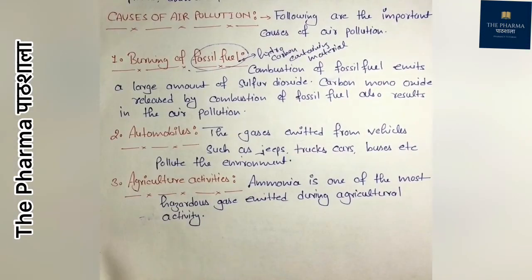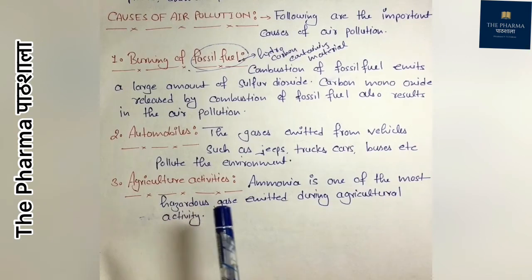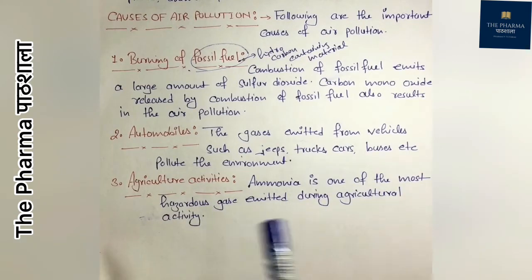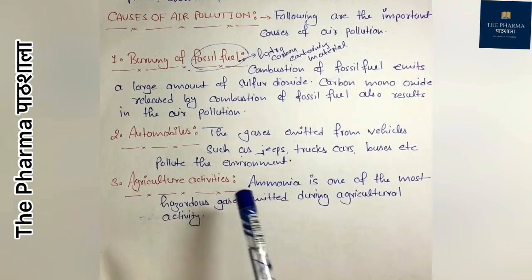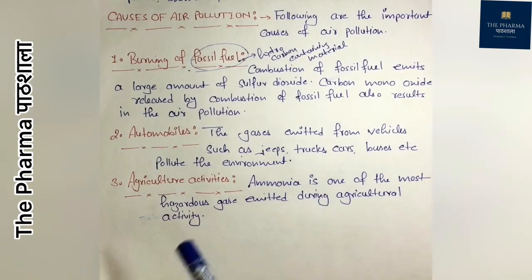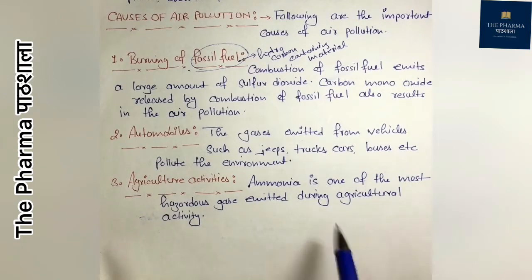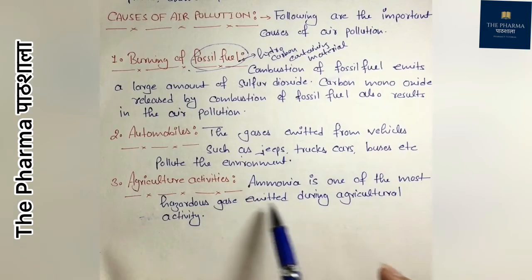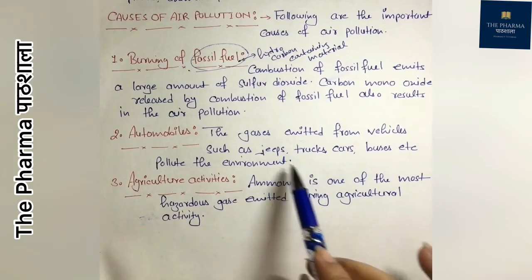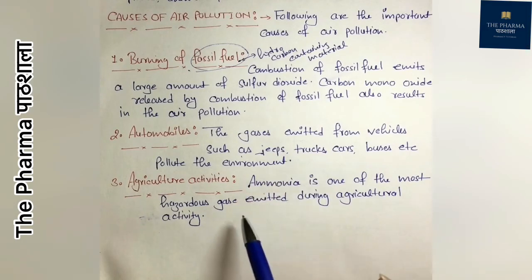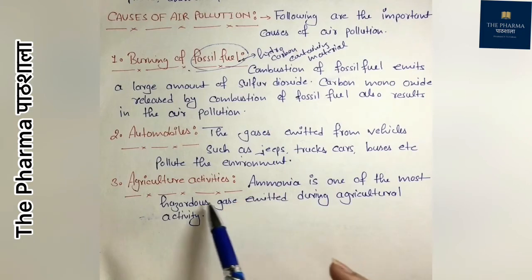The third cause of air pollution is agriculture activity. There is a lot of activity in farming. The insecticides and pesticides used in agriculture release ammonia gas into the air. Ammonia gas is a very hazardous gas and contributes significantly to air pollution.